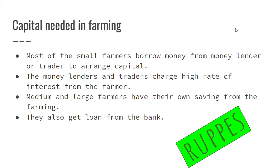Now, if you want to grow crops you need money — to buy seeds, fertilizers, pesticides, and so on. Most of the small farmers borrow money from moneylenders or traders to arrange capital, and these people charge a really high rate of interest. But the large and medium farmers have their own savings from the previous year's farming. They're also smart enough to go to the bank and get a loan where the interest is not that high.